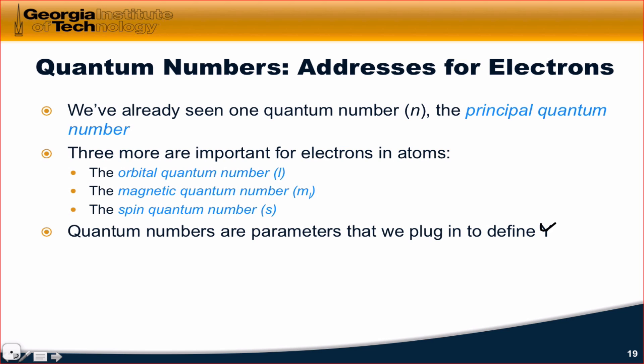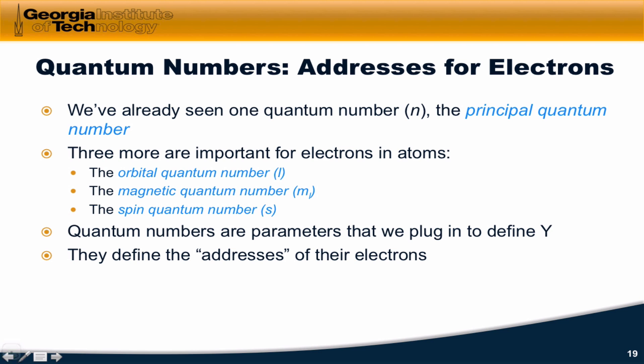I should say, psi. Like we said, at a given energy level, for a given n value, we might have multiple psi's that fit the Schrödinger equation with different values, for example, for l or different values for m sub l or s.